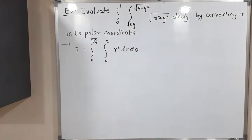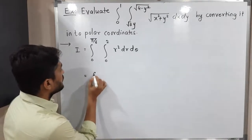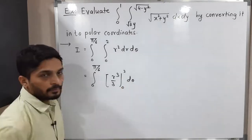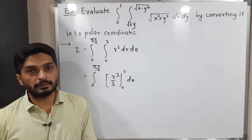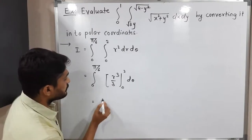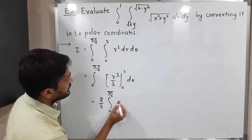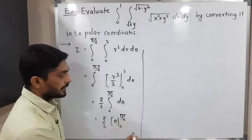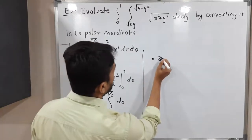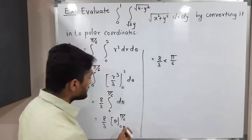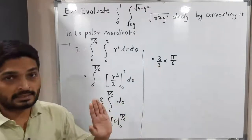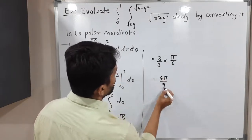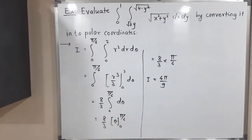Integrating r² with respect to r gives r³/3, evaluated from 0 to 2: 8/3 − 0 = 8/3. This constant is taken outside, leaving the integral of dθ from 0 to π/6, which equals θ evaluated from 0 to π/6, giving π/6. So the result is (8/3) · (π/6) = 8π/18 = 4π/9. The required answer is 4π/9.